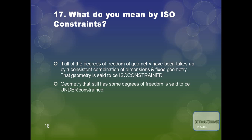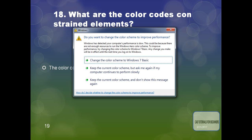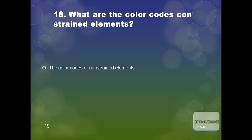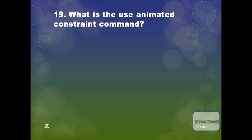The geometry that still has some degree of freedom is said to be under-constrained. The color codes for constraint elements are: for ISO constraint the sketch becomes green, for under-constraint the sketch becomes white, and for over-constraint the sketch becomes magenta. These colors can be changed.